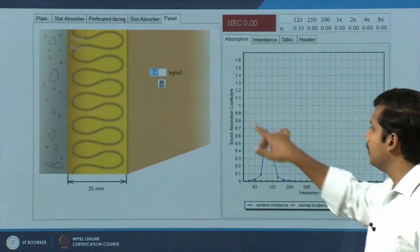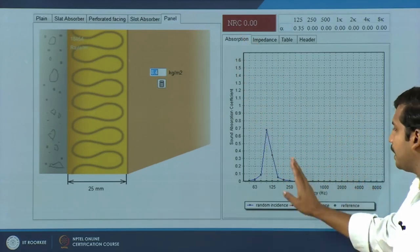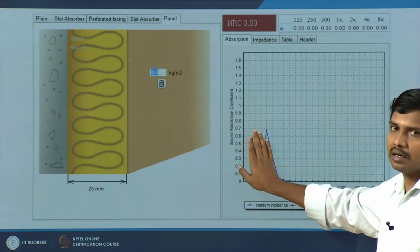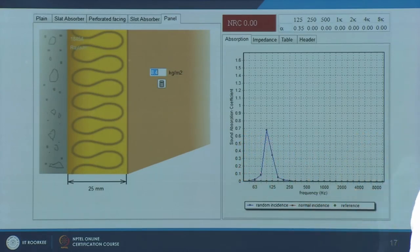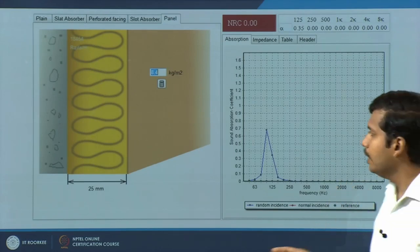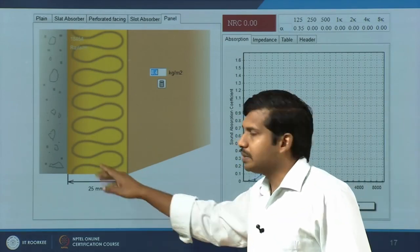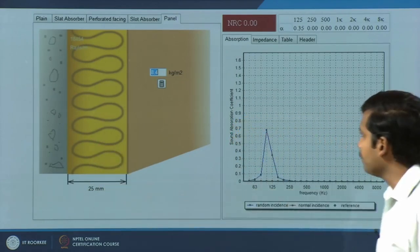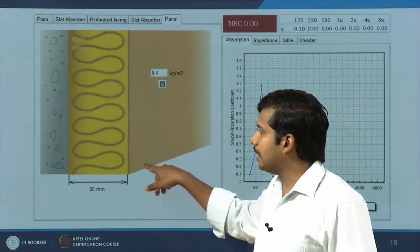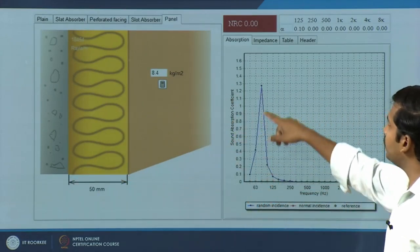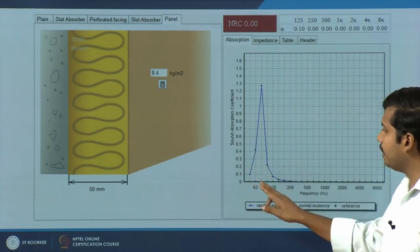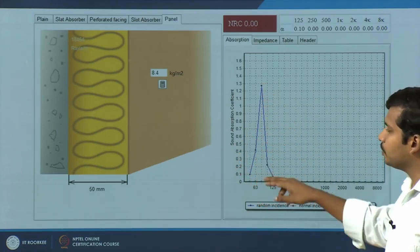This lower frequency range of 63 and 100 Hz is not covered by NRC. If you require absorption at this particular frequency, thin panel absorbers can be of great help. The absorption also varies with thickness and the presence, absence, or type of backing material. If I increase the glass wool from 25 mm to 50 mm — same wall, same panel, just increased thickness — the absorption frequency shifts further lower, getting much closer to 63 Hz, and the absorption coefficient also increases.